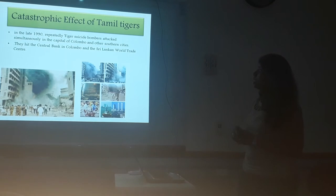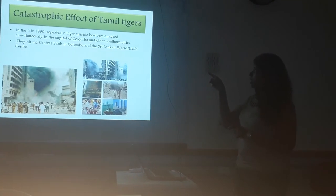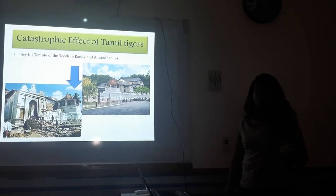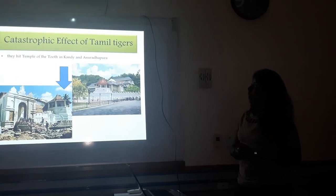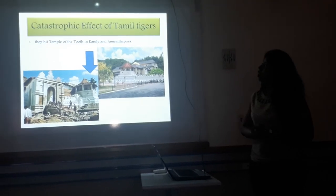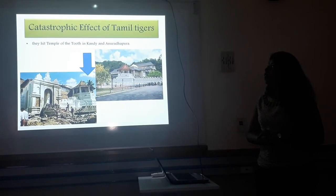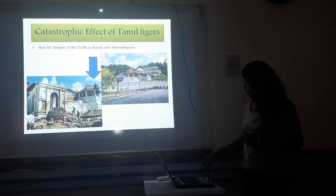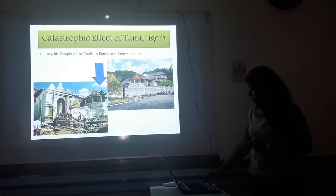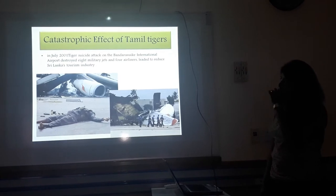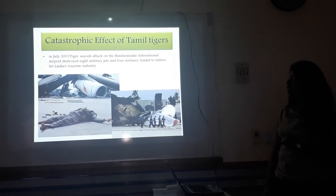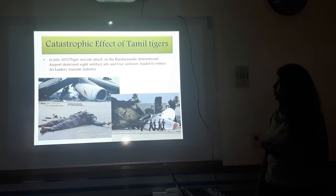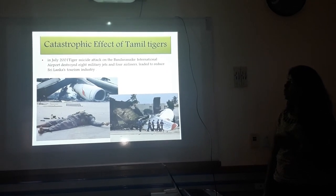They hit the Central Bank in Colombo and the Sri Lankan World Trade Center, also situated in Colombo. They also attacked religious places, especially Buddhist temples in Sri Lanka — for example, the Temple of the Tooth Relic in Kandy. In July 2001, Tiger suicide bombers attacked Bandaranaike International Airport, destroying eight military jets and four airliners, leading to a reduction in Sri Lanka's tourism industry.